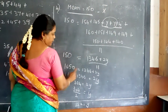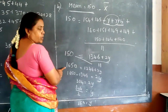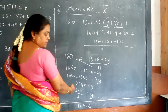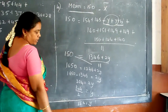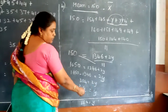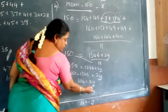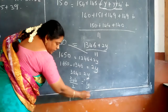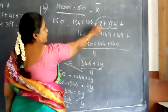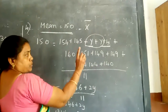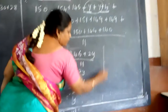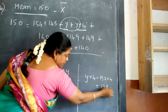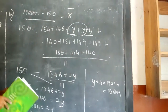Now by cross multiplication, 150 × 11 = 1650, which equals 1346 + 2y. So 1650 minus 1346 gives 304, and dividing by 2 gives y = 152, which is the height of one student. The other student's height is y + 4 = 152 + 4 = 156 centimeters. That ends this question. Thank you.